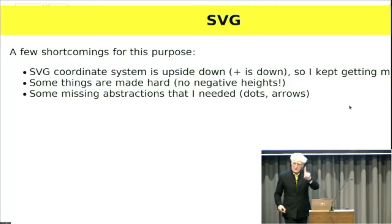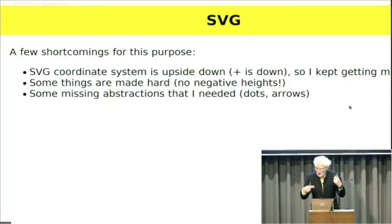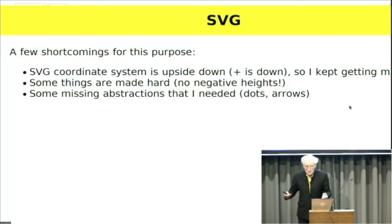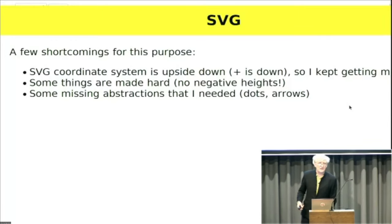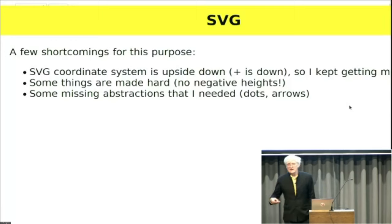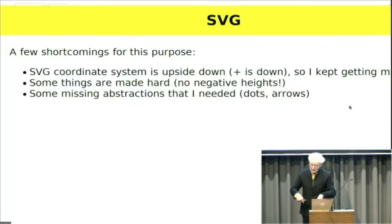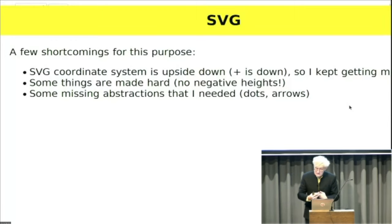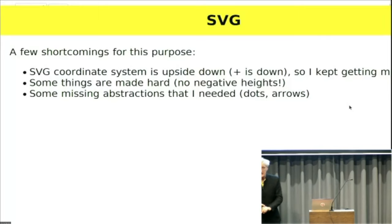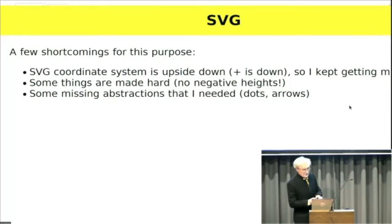Plus is downwards in SVG, whereas in mathematics, plus is upwards. I kept getting it wrong — I had a couple of dozen diagrams, and I kept mixing up my pluses and minuses because I was thinking plus upwards but had to diagram it with plus downwards. There are also things that are hard in SVG — for instance, you can't have negative heights, which I think is absolutely astounding and actually a bug in SVG.